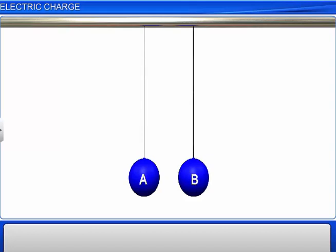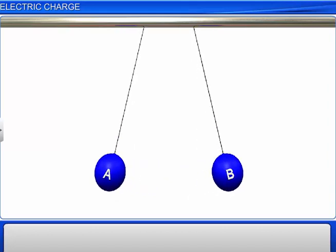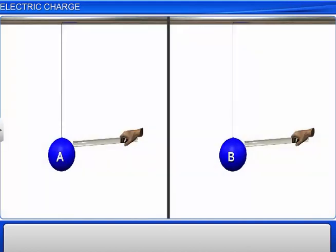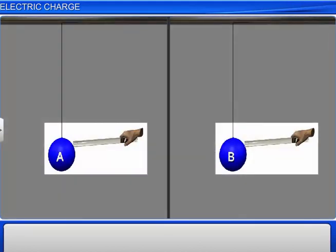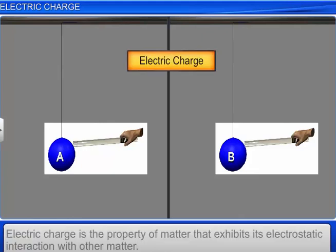The physical quantity responsible for all these phenomena is known as electric charge. Electric charge can be defined as the property of matter that exhibits its electrostatic interaction with other matter.